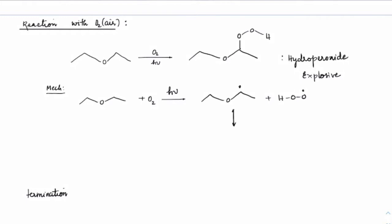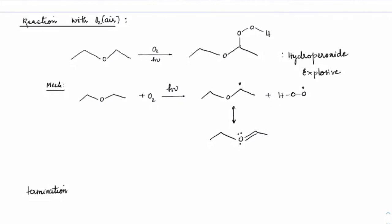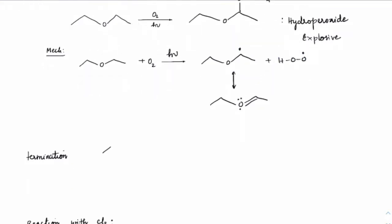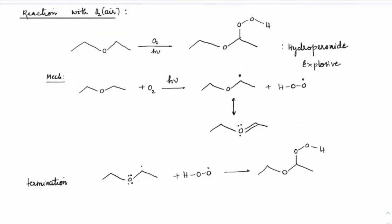This radical is actually resonance stabilized — it can get the double bond character. This type of resonance stabilization helps the radical to stabilize. As soon as you have these two radicals, they will terminate to give the hydroperoxide. We will see this as a termination step, where this radical terminates with HOO•. All you need to know is what hydroperoxide is and whether it is explosive in nature.